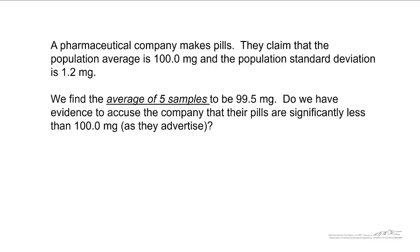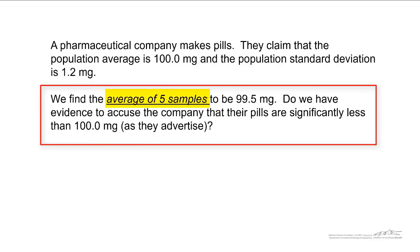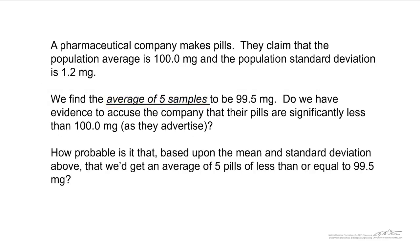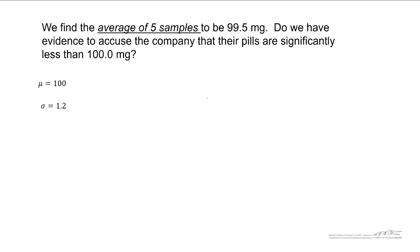However, what if we took an average of five samples, and the average of five samples was 99.5? How probable is it, based upon the mean and standard deviation claimed by the company, that we get an average of five pills of less than or equal to 99.5 milligrams? So not a single pill, but an average of five pills. How often does that happen? So we find an average to be 99.5. We can do the same type of analysis.